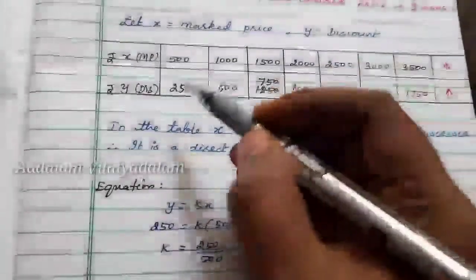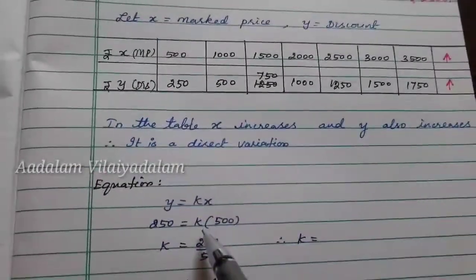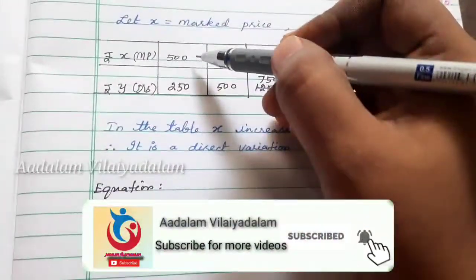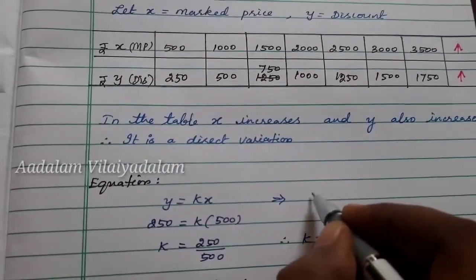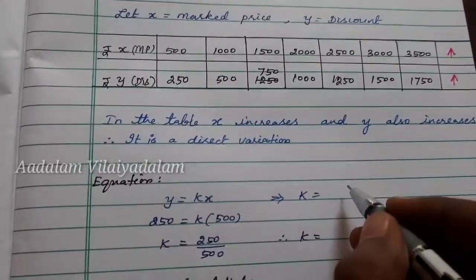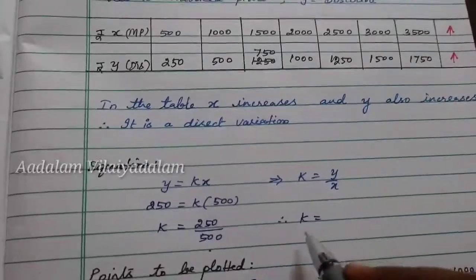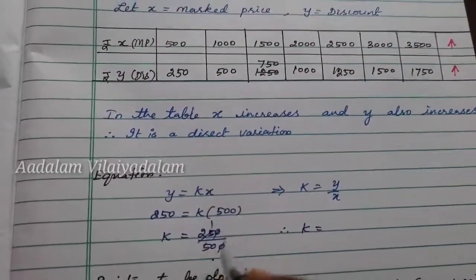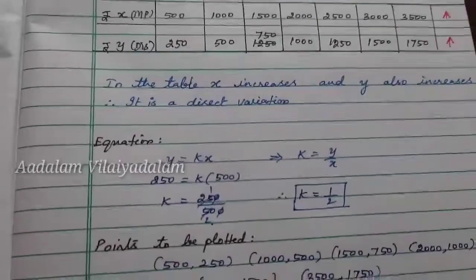The equation for this direct variation is y equal to kx. Taking the first table values, y is 250 and x is 500. We find k equal to y divided by x, that is 250 divided by 500, which gives k equal to 1 by 2. So the k value equals 1 by 2.